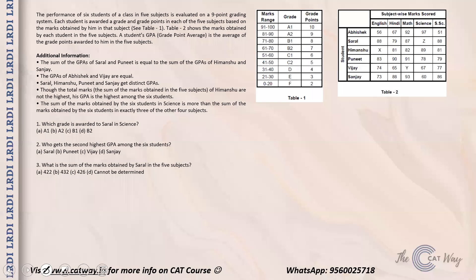Today's problem: the performance of six students of a class in five subjects is evaluated on a nine-point grading system. Each student is awarded a grade and grade points in each of the five subjects based on the marks obtained. For example, marks between 91 to 100 give grade A1 with 10 grade points; marks 81 to 90 give grade A2 with nine grade points, and so on. Table two shows the marks obtained by each student in the five subjects.